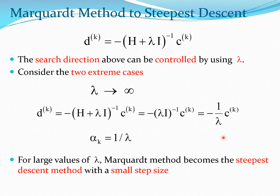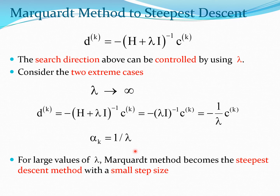Typically you start this algorithm with a large value of lambda, so you will start with a small step size because when lambda is large, 1/lambda is going to be small. You are going to start with a small step size and progressively increase the step size.